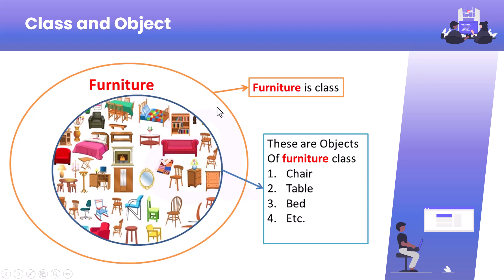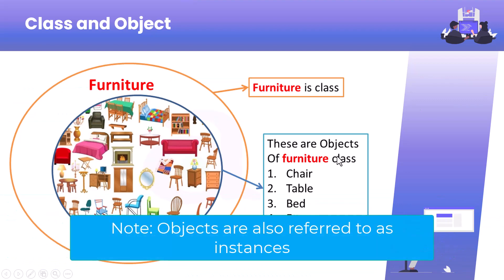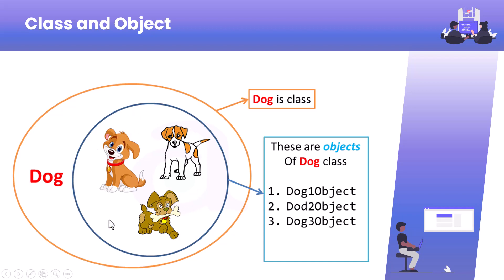If you create a class — for example a Dog class — you can create multiple objects like Dog1, Dog2, Dog3, so three different types of dog can exist. Based on the specification you have to change the object. Now using this example we will talk about the data members and methods.